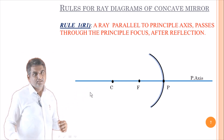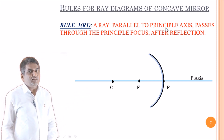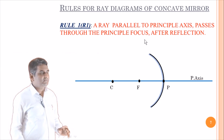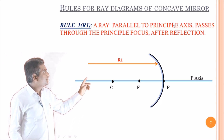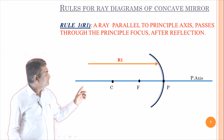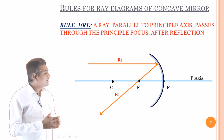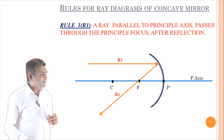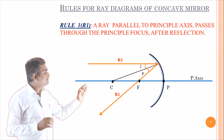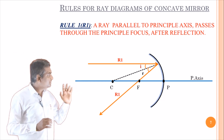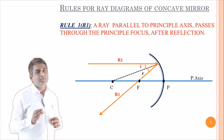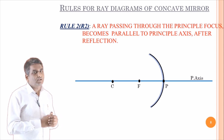The first rule R1: a ray parallel to the principal axis passes through the principal focus after reflection. Let us draw a parallel ray — this ray is parallel to the principal axis. After reflection, this parallel ray passes through the principal focus, because if you draw the normal at the point of incidence, the laws of reflection are obeyed — that is, the angle of incidence equals the angle of reflection, and the incident ray, reflected ray, and normal all lie in the same plane.